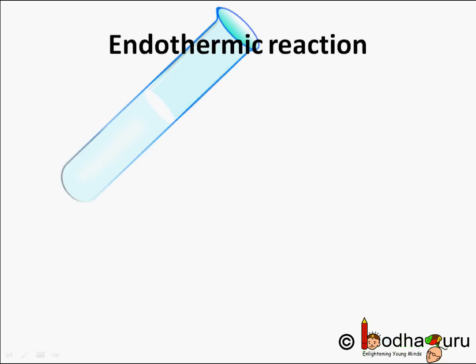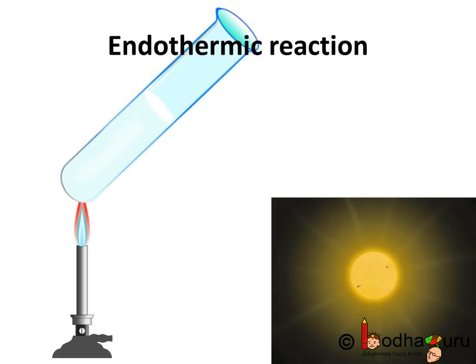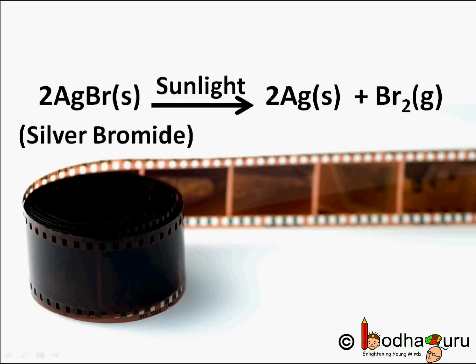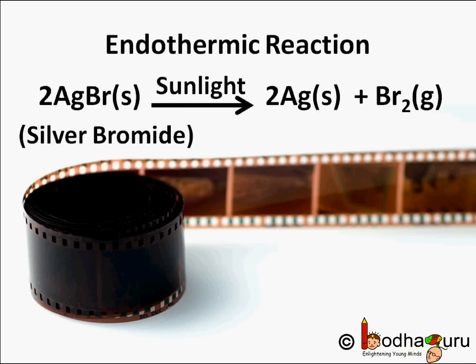In some reactions, energy is required in the form of heat, light, or electricity to break down the reactants. This kind of reaction in which energy is absorbed is called an endothermic reaction. As it happened in the case of silver bromide — when light falls on it, its molecule decomposes into silver and bromine. Thus, it is an energy-absorbing reaction, and hence it is an endothermic reaction.